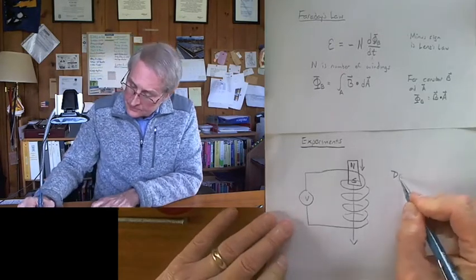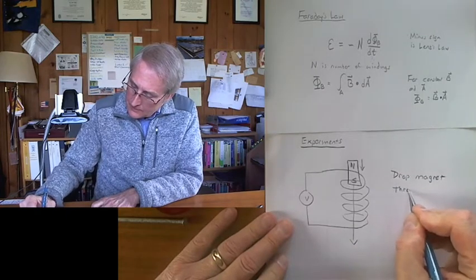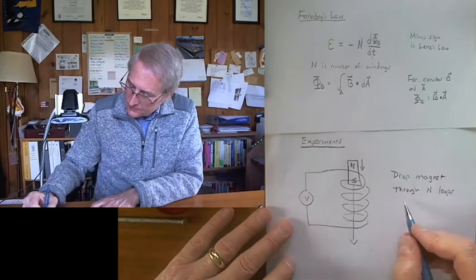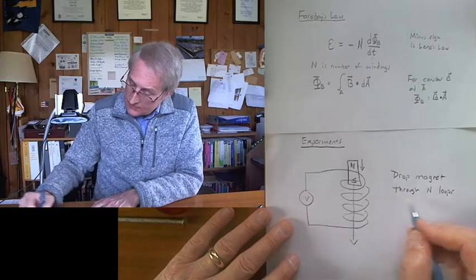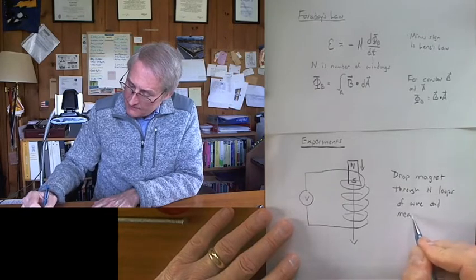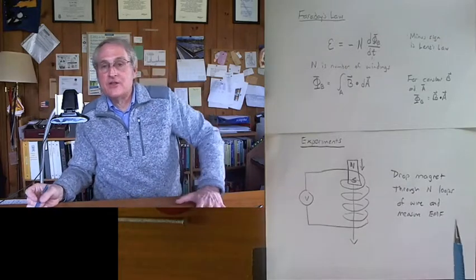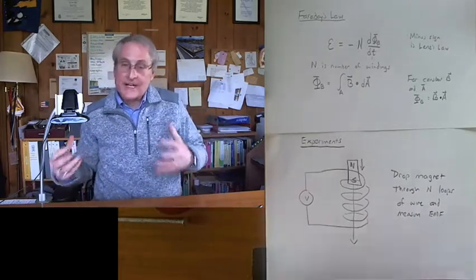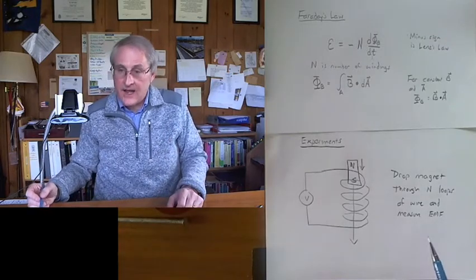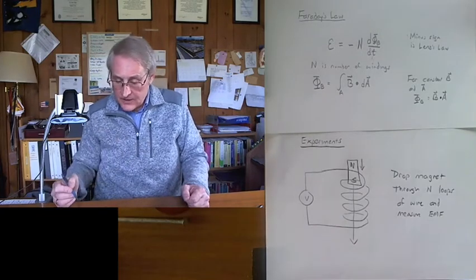So drop a magnet through N loops, capital N is the number of loops of wire and we'll measure the EMF. Now the EMF will be constantly changing so for our experiment in order to get an idea of how big of an effect this is we can just take the maximum EMF of that constantly changing curve.